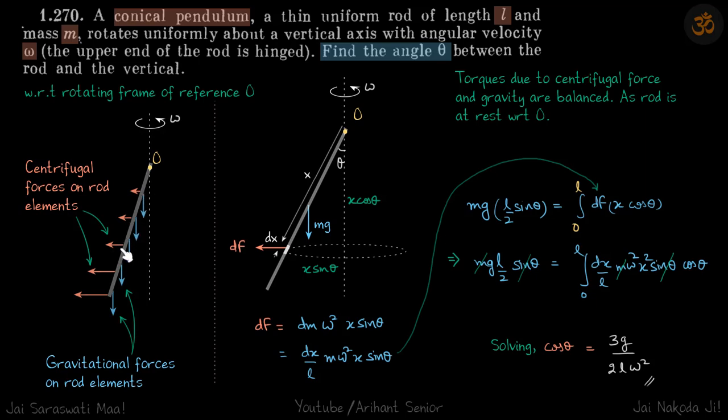Each element will experience a different amount of centrifugal force, and to counter that each element has the same amount of mg force downward. That's going to provide the counter torque that will prevent the rod from flying up.